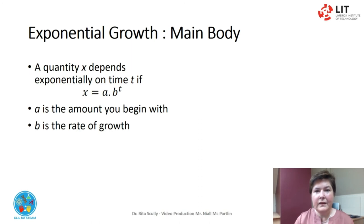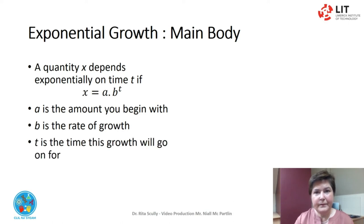B is the rate of growth — in our example, twice, it doubles. And t is the time this growth goes on for — in our example, it was 31 days.